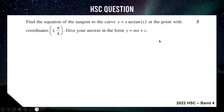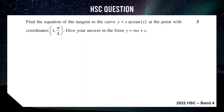Finishing off with an HSC 2022 question — a band 4 level question. Find the equation of the tangent to the curve y equals x arc tan x at the point with coordinates (1, π/4), giving the answer in the form y equals mx plus c. If you've been following the lesson and want a challenge, pause and try it yourself.